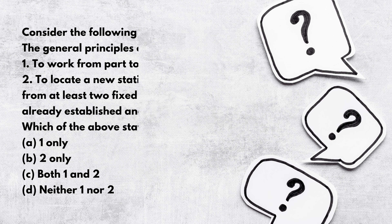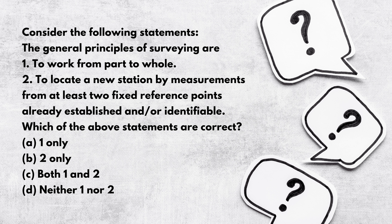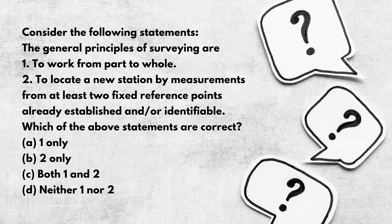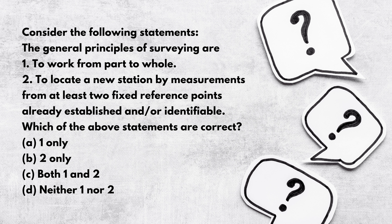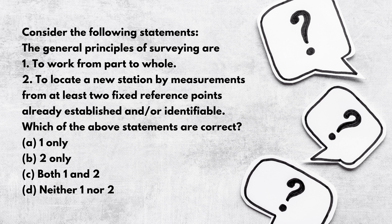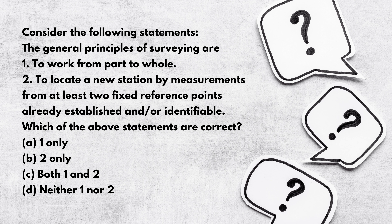Next, question number three: consider the following statements and choose which is correct regarding the general principles of surveying. The first statement says 'to work from part to whole.' This statement is incorrect, because the first principle of surveying is actually 'to work from whole to part.'